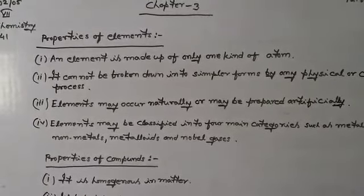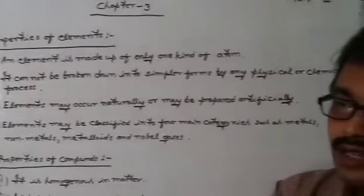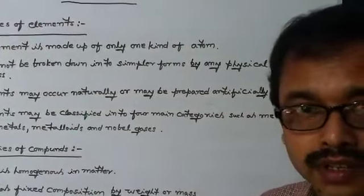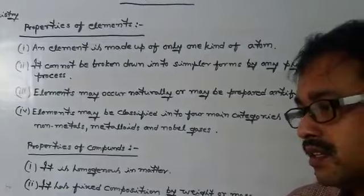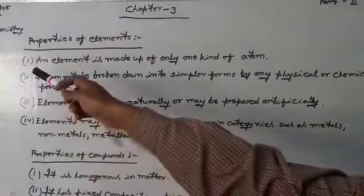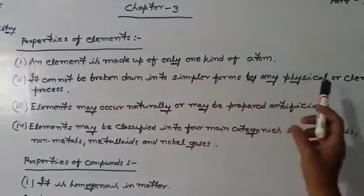Now the properties of elements. The first property of the element: the elements are the type of pure substance. Why? Elements are called pure substance because an element is made up of only one kind of atom.